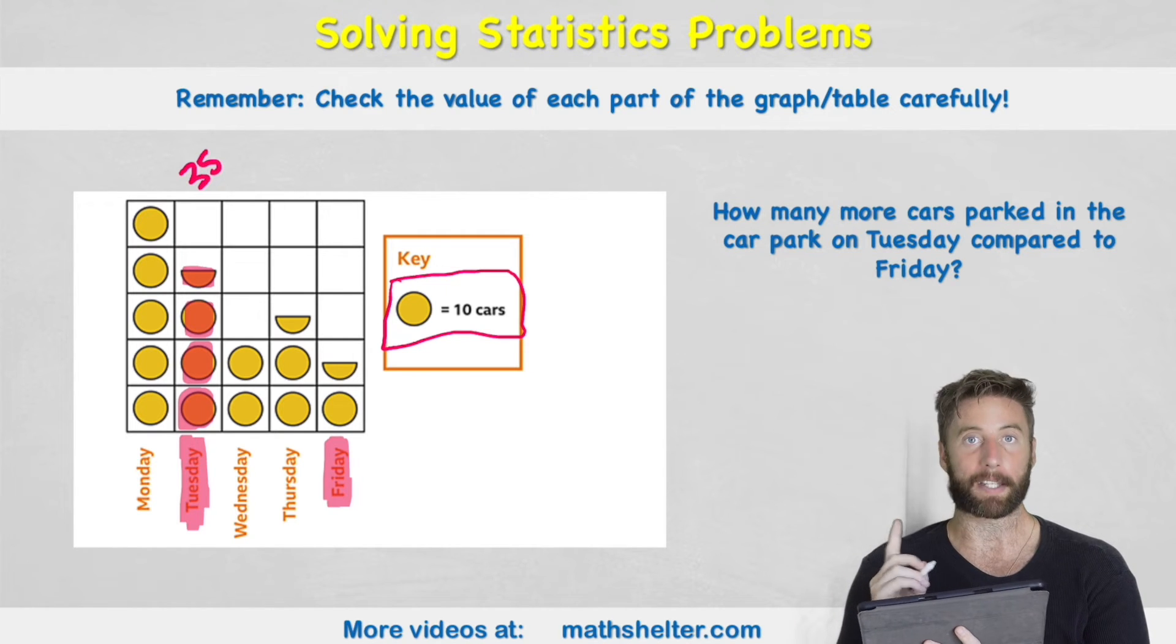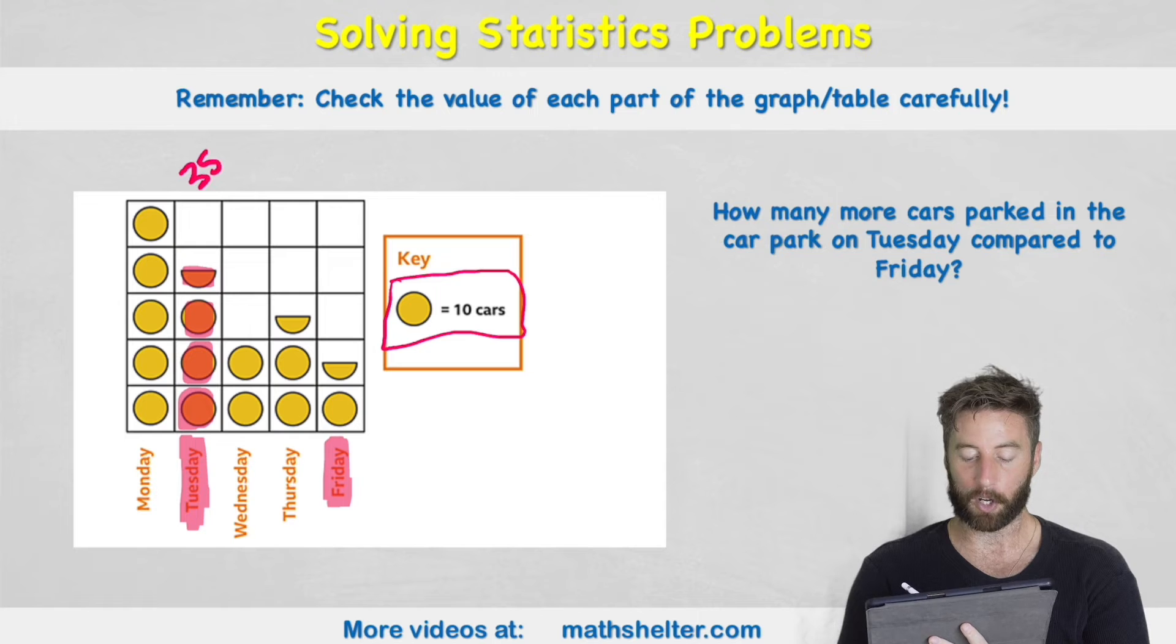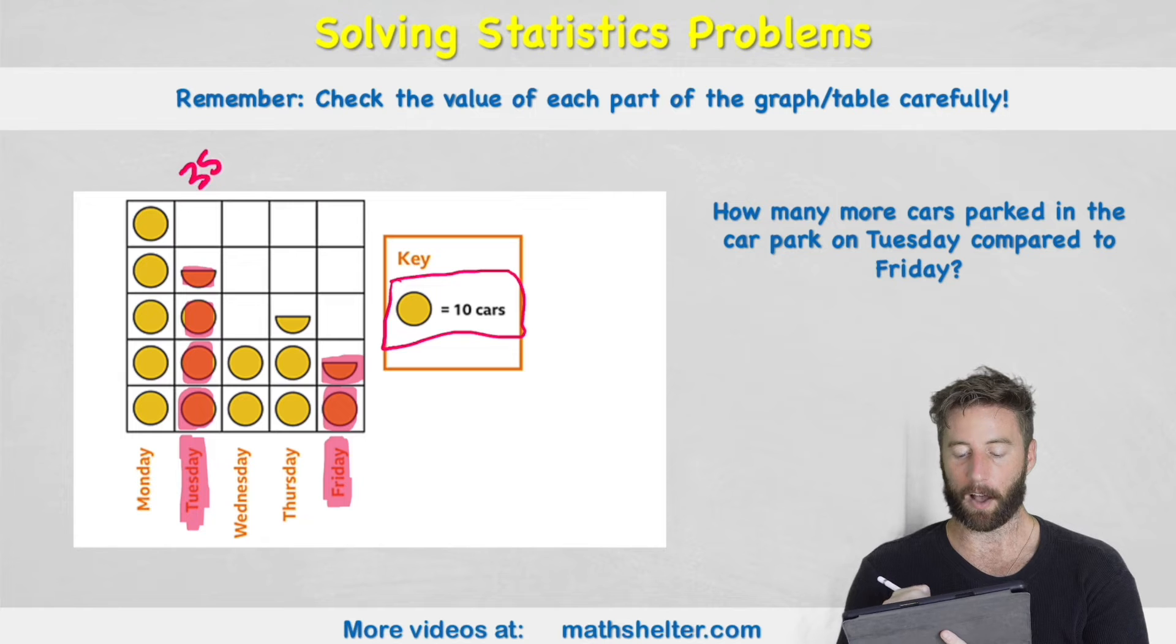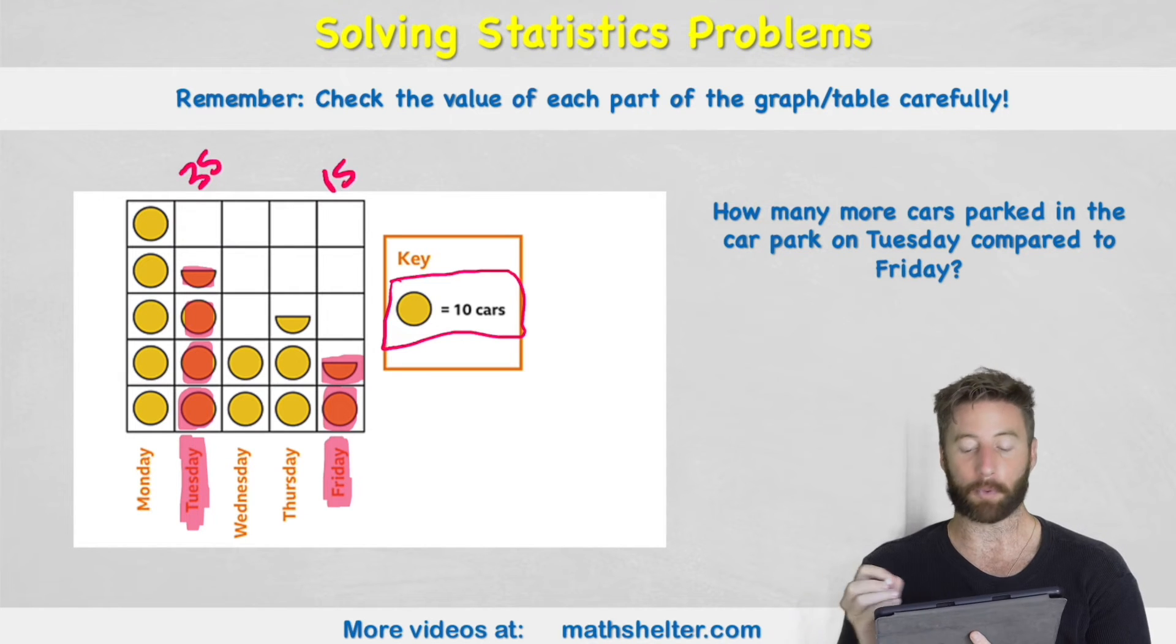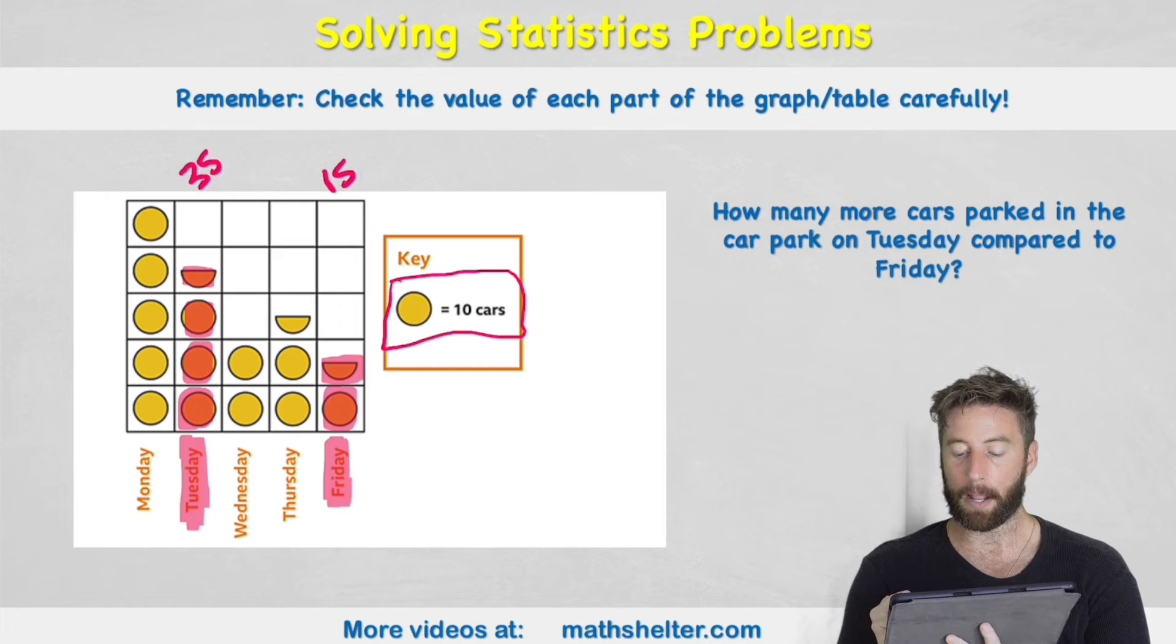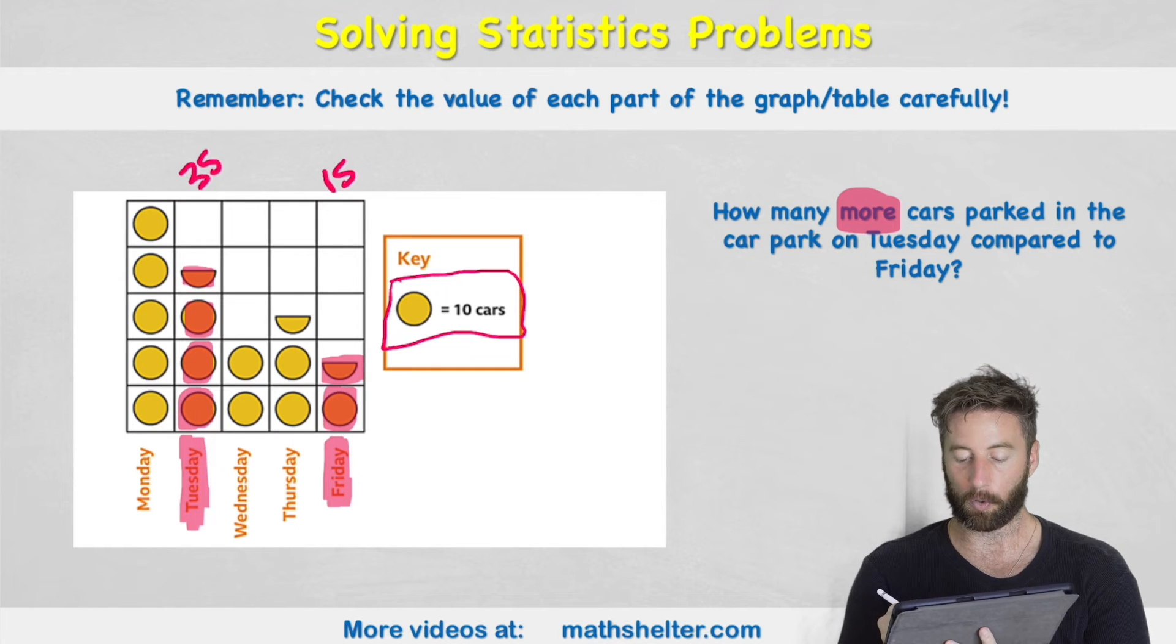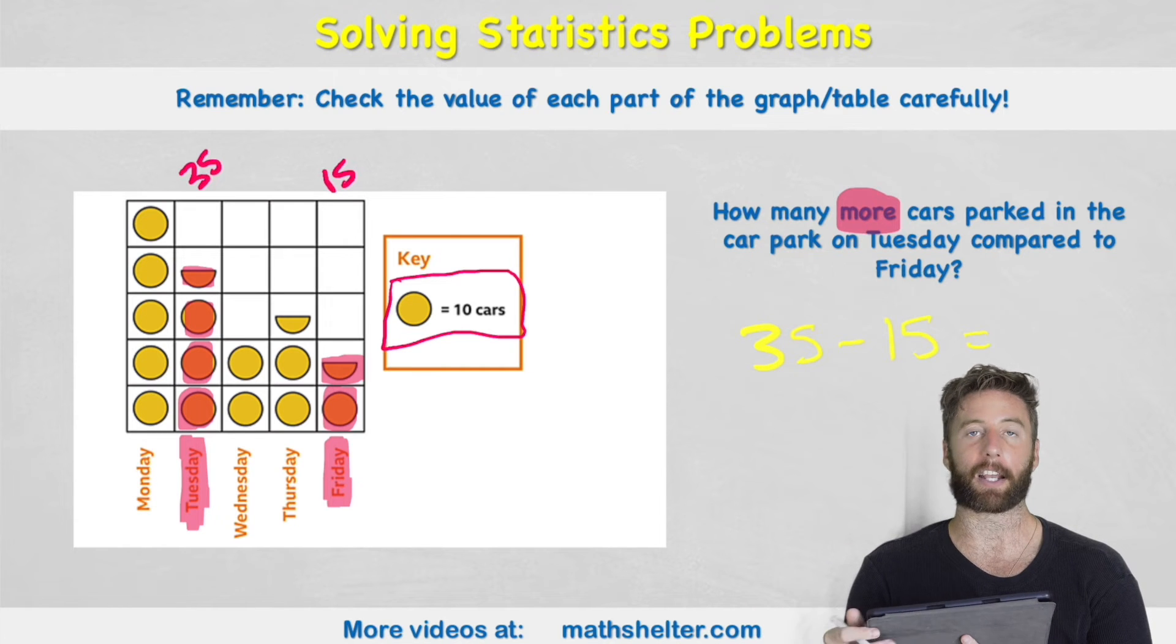Let's look at Friday and remember the same principle. We have a whole circle which is 10, half a circle which is 5. 10 plus 5 is 15. Let's look back to what my question said. How many more cars parked in the car park on Tuesday compared to Friday? So what it's asking me is what's the difference between my 35 and my 15? And to work that out all I need to do is 35 subtract 15 to get my answer. Now I can use any method I like here. I could use a number line, I could count backwards, I could use column subtraction if I'm there yet.